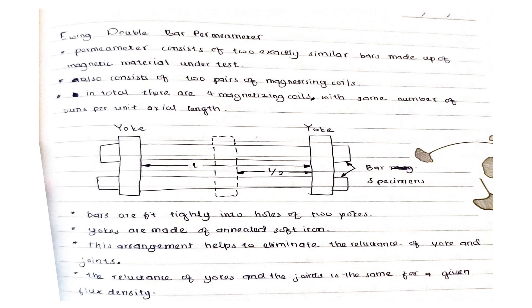One pair of coils is exactly half the length of the other pair. Thus there are in all four magnetizing coils: two having full length and two having half length. The number of turns per unit length is the same for all the coils.